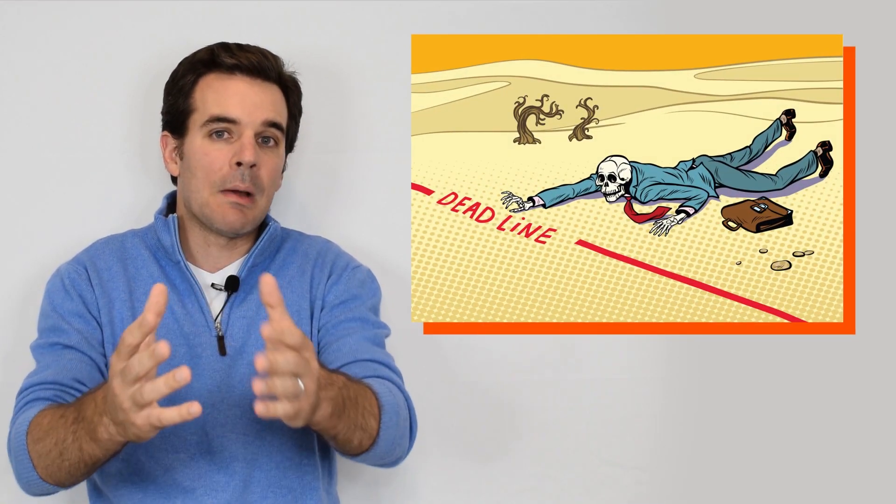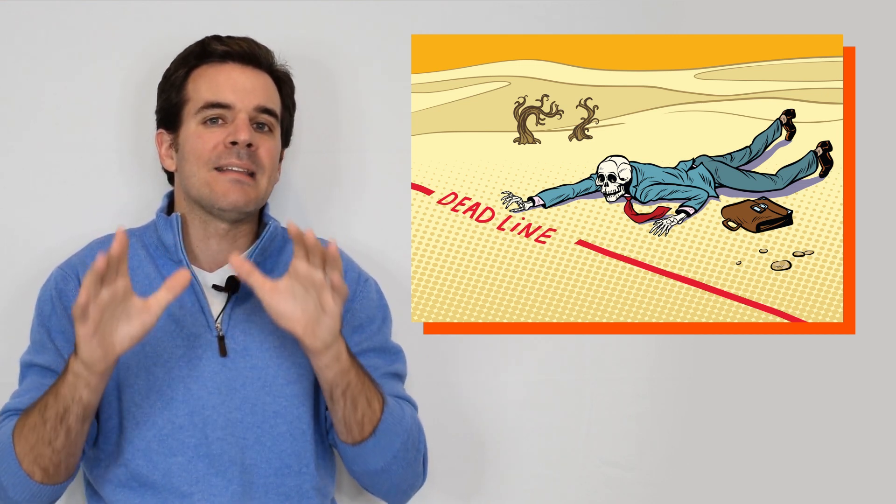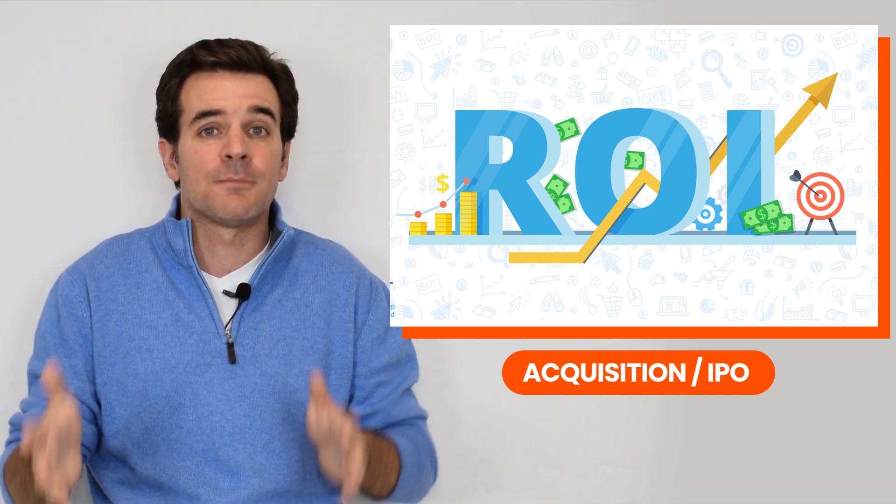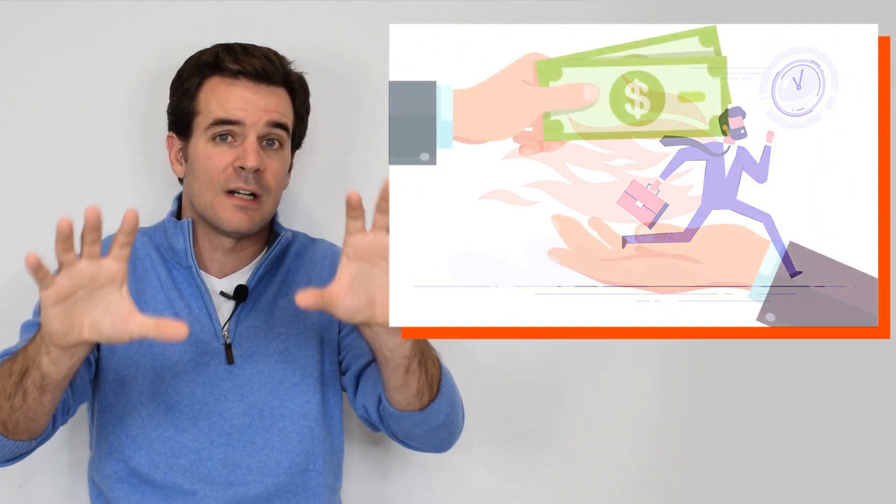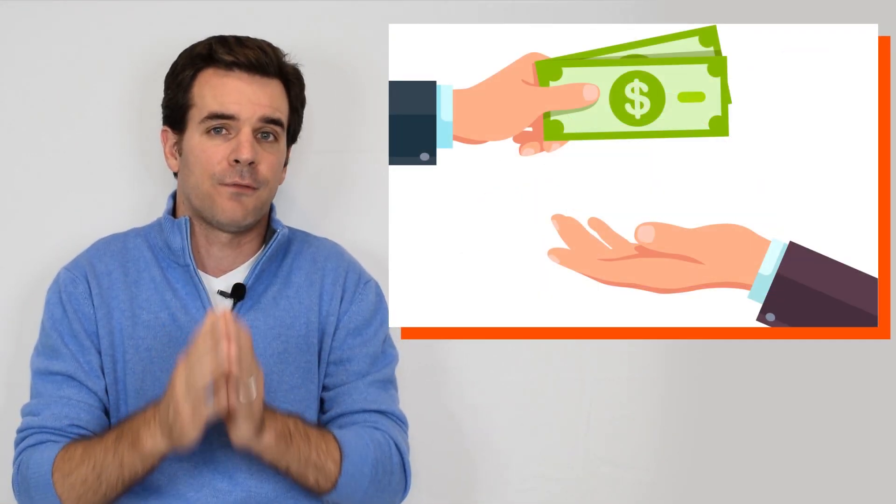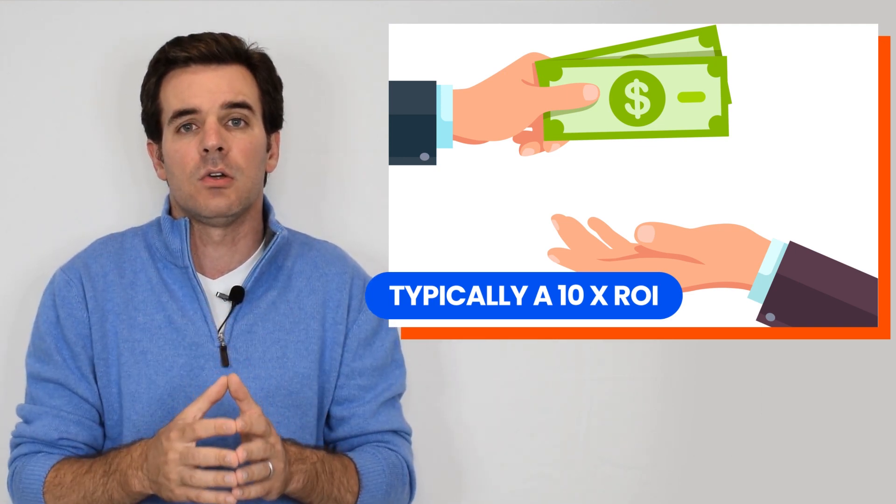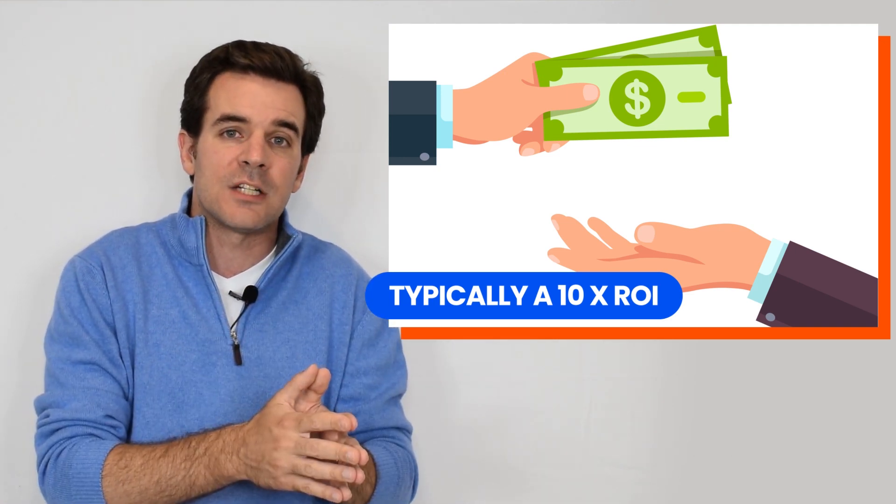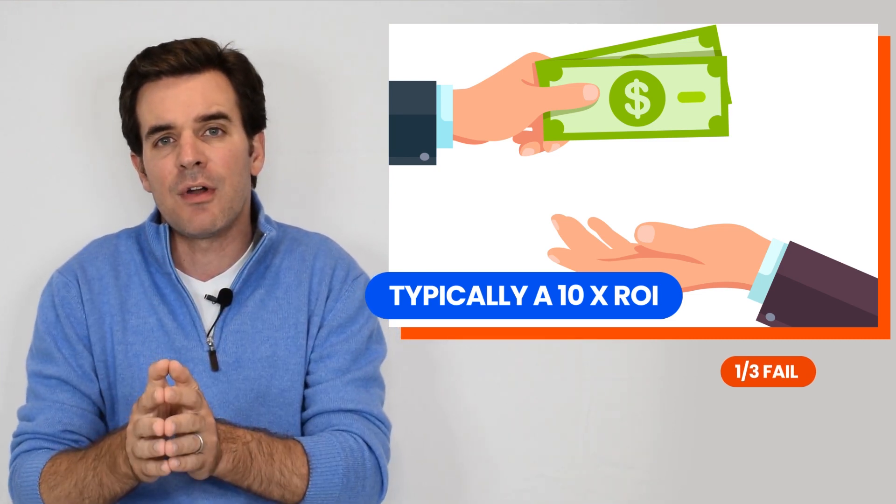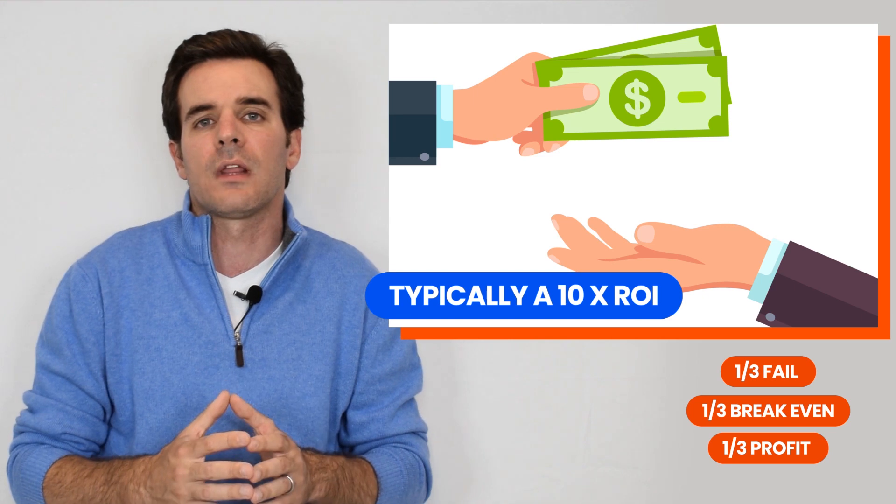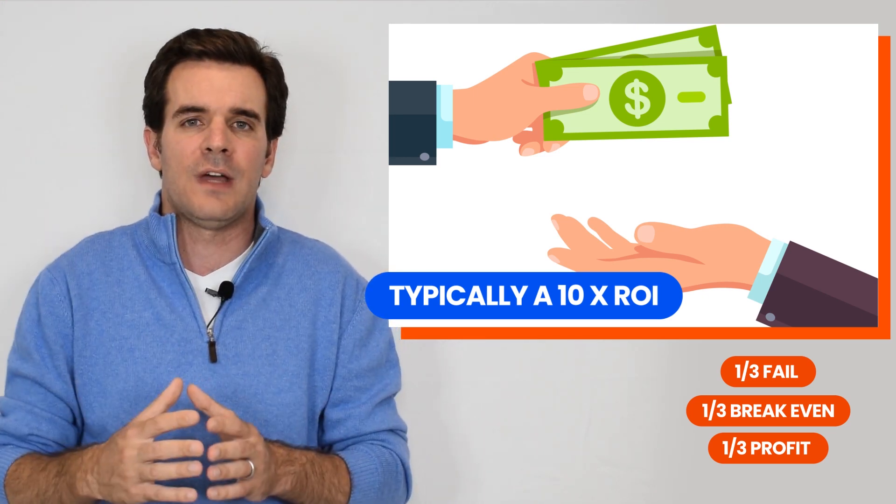The next con is that you're committing to an exit. The minute you take venture capital money, you're making them a promise that eventually you'll give them returns, whether through acquisition, IPO, or whatever that is. When a venture capital firm invests in your business, they're looking for at least 10x return. The rule of thumb is that one-third of their investments go out of business, another third breaks even, and the last third provides the returns to cover losses and provide returns to their own investors, the limited partners.